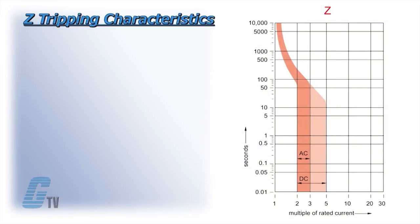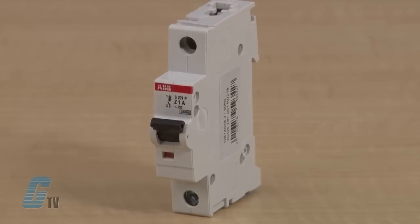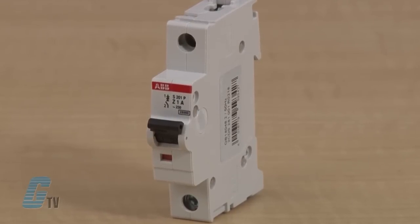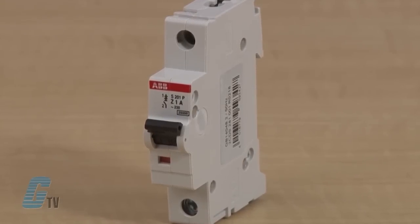Breakers with the Z tripping characteristic are available up through 63 amps. The Z characteristic offers instantaneous tripping between 2 and 3 times rated current in 50 or 60 Hz systems. Many applications require very low short circuit trip settings in order to protect semiconductors or other sensitive devices and the Z trip characteristic may provide maximum protection and service for these applications.